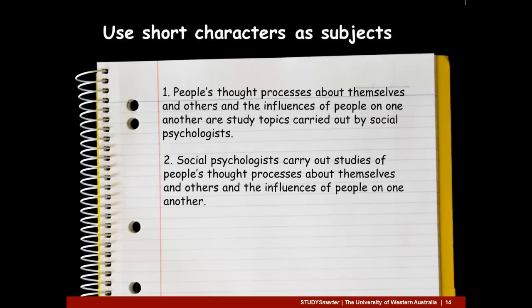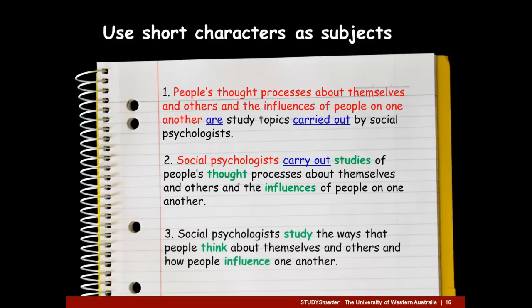Another way of creating impact in writing is to use short, specific characters as subjects. Compare these sentences — which do you prefer? Most people prefer the second sentence for two reasons. First, it expresses its subject as a short, specific character — 'social psychologists' — rather than a long abstract phrase. Secondly, it expresses its verb in the active form 'carry out' rather than the passive form 'are carried out'. But most people like the third sentence even better: it expresses important actions — study, think, and influence — as verbs rather than nouns or adjectives.